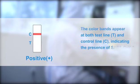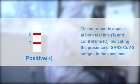Positive results: Color bands appear at both test line T and control line C, indicating the presence of SARS-CoV-2 antigen in the specimen.